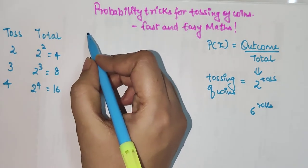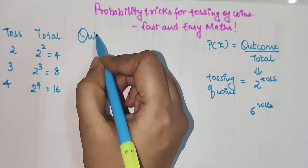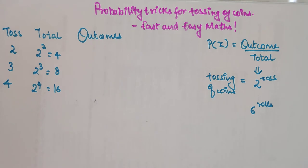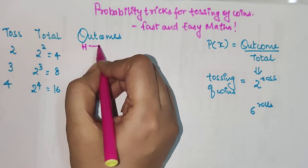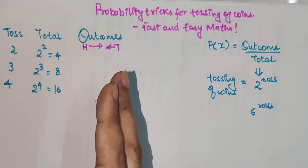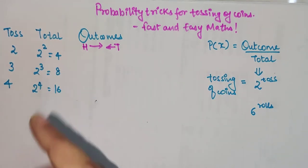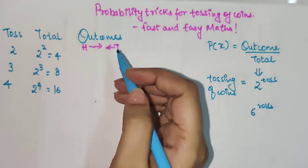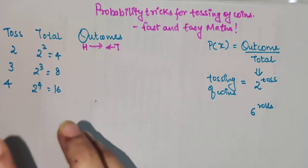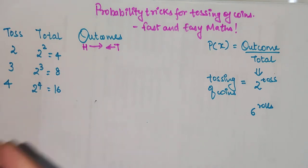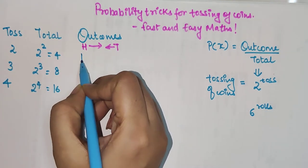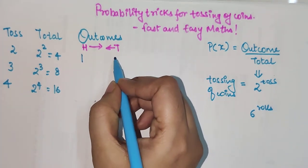Now we come to the very crucial part — the outcomes. One important thing: for heads you will read from left to right, and for tails you will read from right to left. When a coin is tossed two times, the possibility of having all heads is 1, and similarly the possibility of having all tails is also 1.